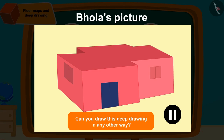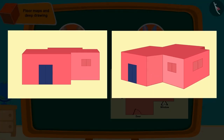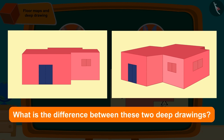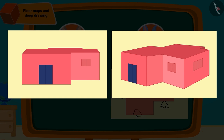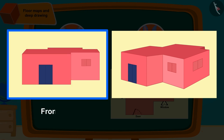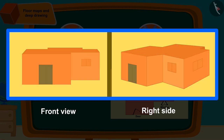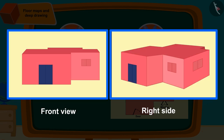Can Bholla make this deep drawing in any other way? You can try to make such a picture in your notebook by pausing the video. Bholla can also make a deep drawing of the room in this way. Can you tell what is the difference between these two deep drawings? This picture is made by looking at the room from the front, while this deep picture is made by looking at the room from the right side. We can see any three-dimensional object from different views. We will learn about it in the next video.